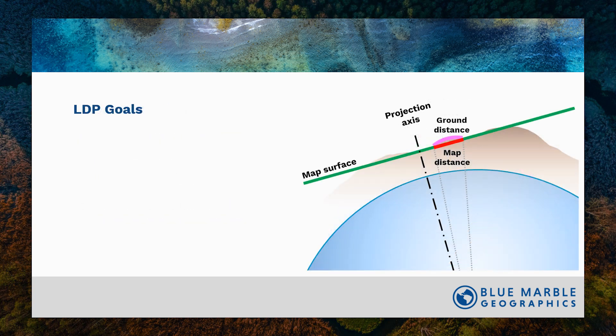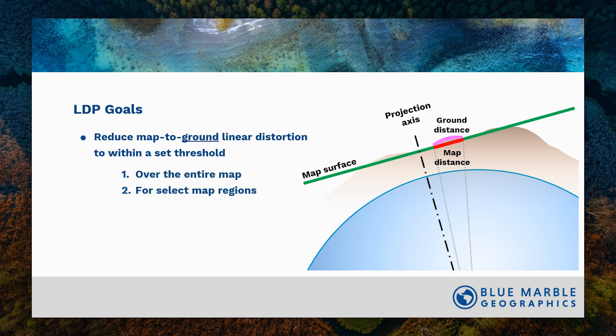The goals in creating an LDP are to reduce the map-to-ground linear distance — so we want not the ellipsoid, but the ground — and we want to reduce it to within some predefined set threshold. That might be over the entire map, or just for some select map region, such as a valley or some population centers. And we want it to be software-friendly, which really means we want it to be portable, so we can move it from one piece of software to another.